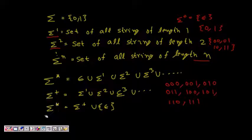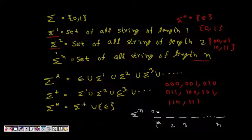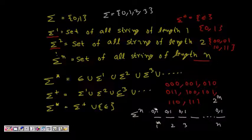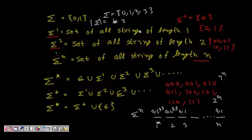A simple question: what is the size of sigma^n? If our alphabet is {0,1}, we have n positions each filled with 0 or 1, giving 2^n strings. If the alphabet had 4 symbols, it would be 4^n. In general, if the alphabet size is x, the size of sigma^n is x^n.